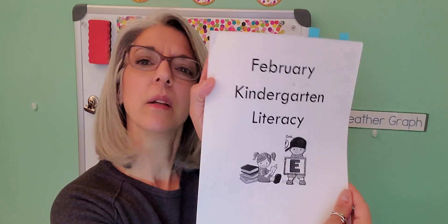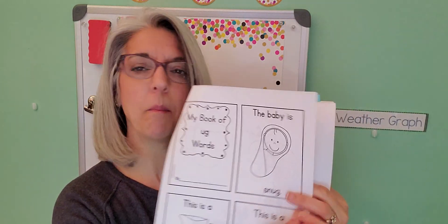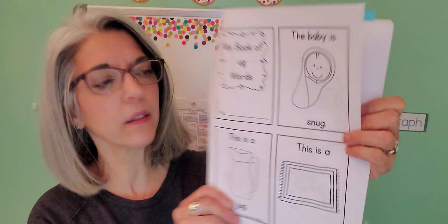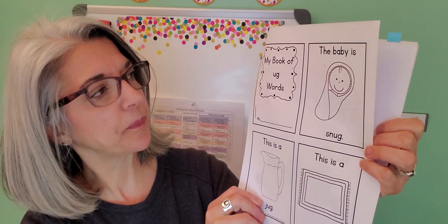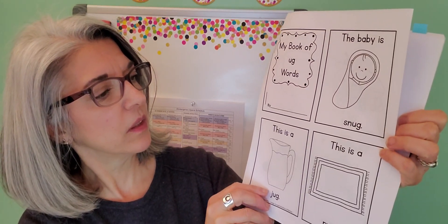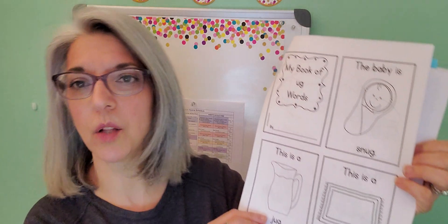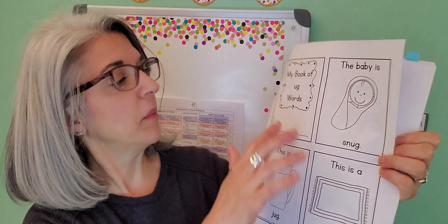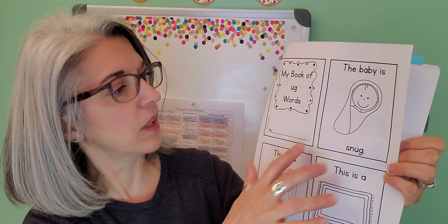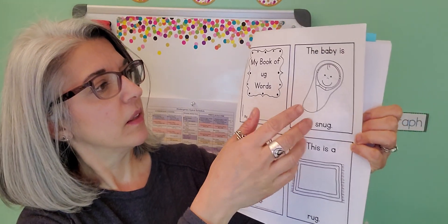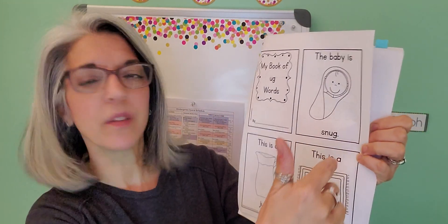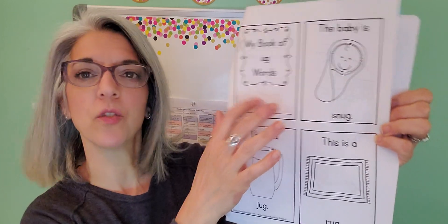The second must-do activity — we are still using February. This is going to be our last week using the February packets. So in the February literacy packet on the very last page, it's called My Book of Ugg Words. You're going to cut, color, and staple this — or you can color and then cut and staple, whichever. You make a little book, so you'll color the pictures and then cut them all out separately and then staple them into the book. This is your cover.